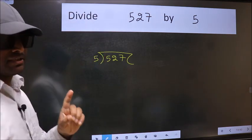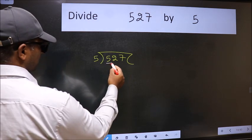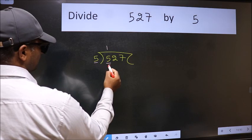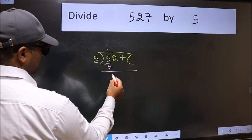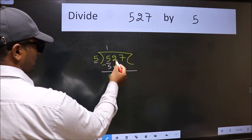This is your step 1. Next, here we have 5 and here also 5. When do we get 5 in 5 table? 5 once 5. Now we should subtract, we get 0. After this, bring down the beside number, so 2 down.